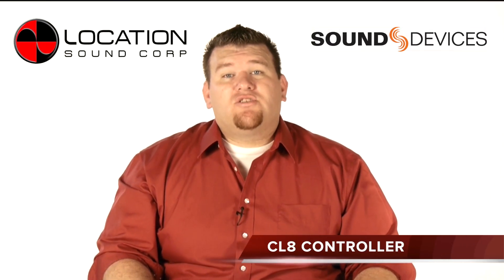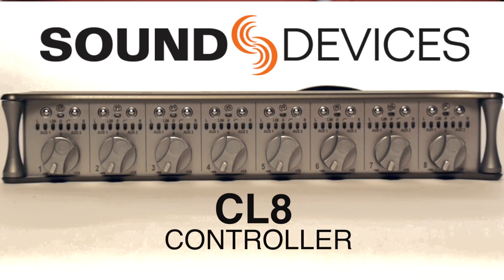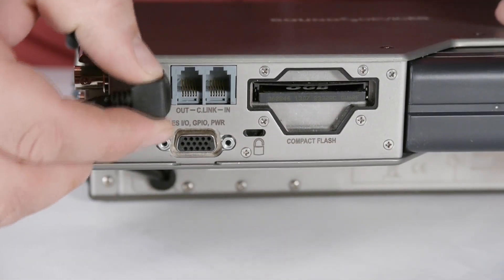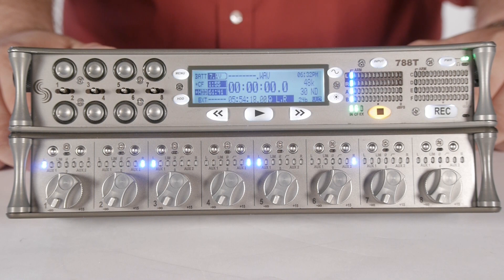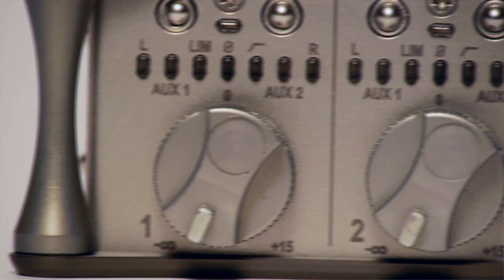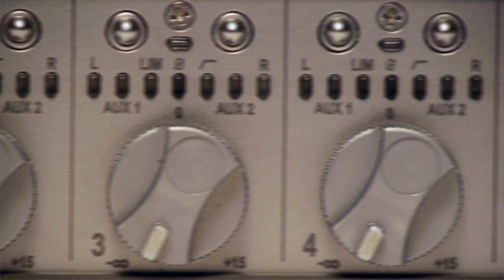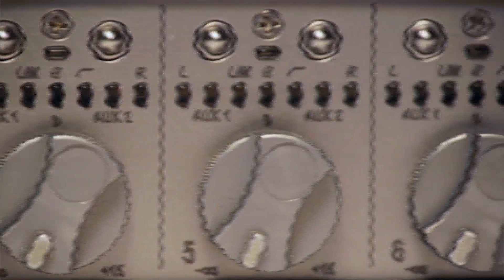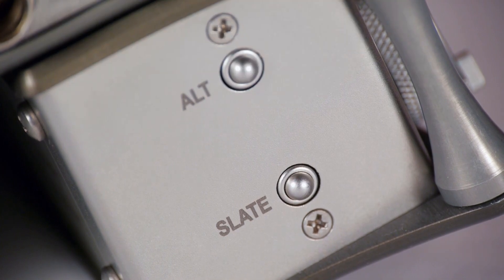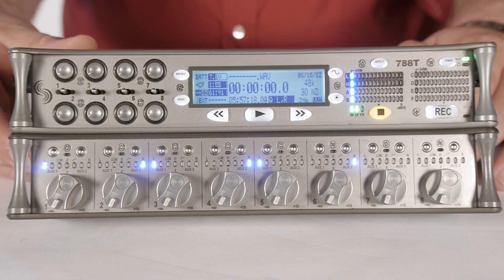So now let's talk about the CL8 controller. The CL8 connects to the 788T's keyboard port via USB on the back panel of the unit. The CL8 controller is an optional control surface for the 788T that significantly expands its mixing capability. Its large rotary style faders provide precise control of gain levels sent to the master left-right mix pre or post fade.